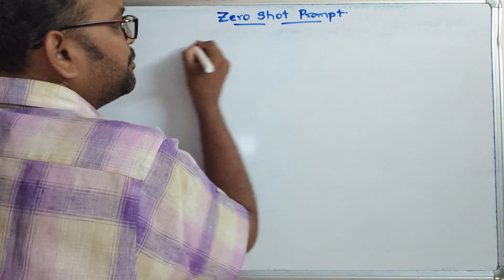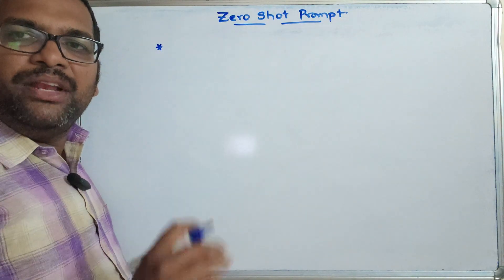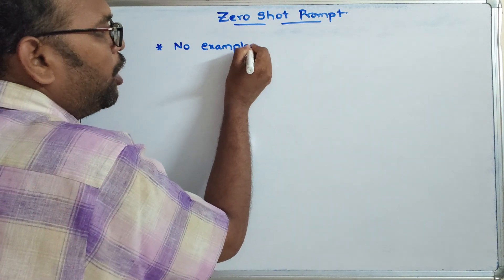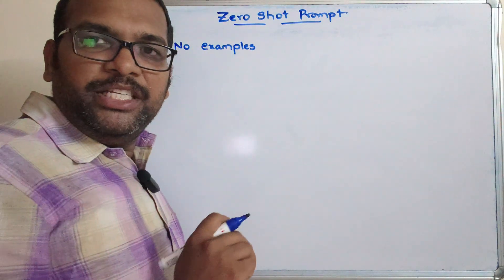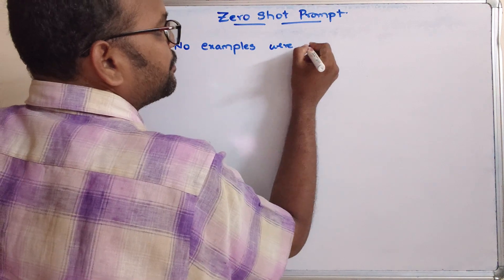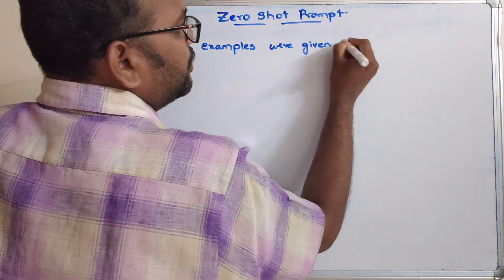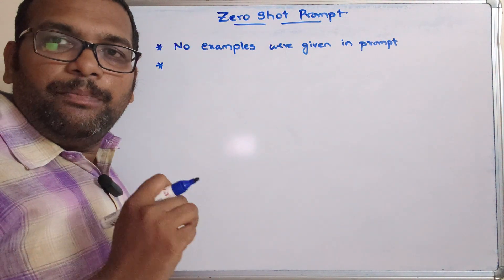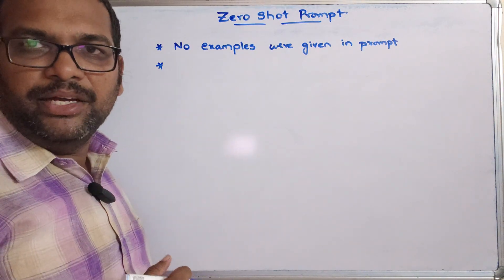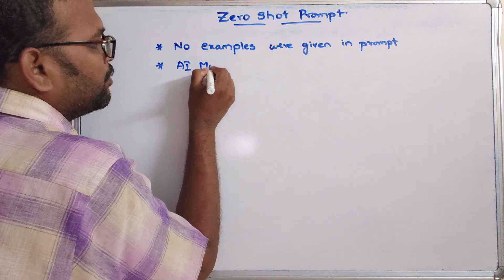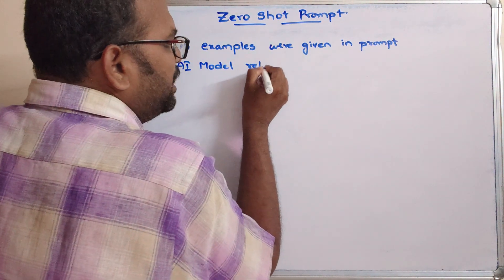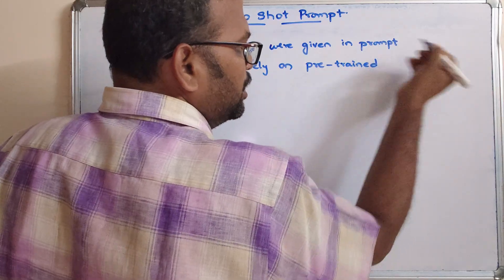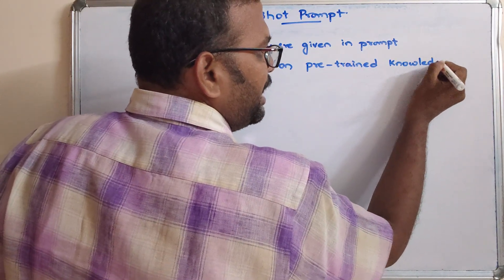Zero-shot prompt means there will be no examples given in the prompt. We are not giving any kind of examples to the prompt about how the output should be generated. The AI model completely relies on pre-trained knowledge because we are not giving any kind of information.